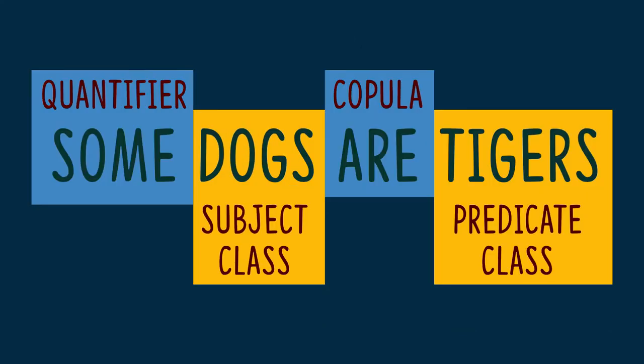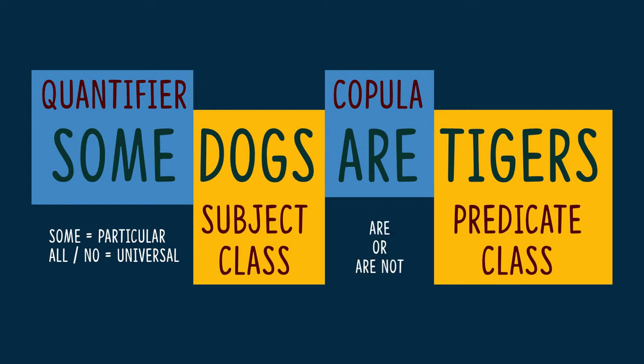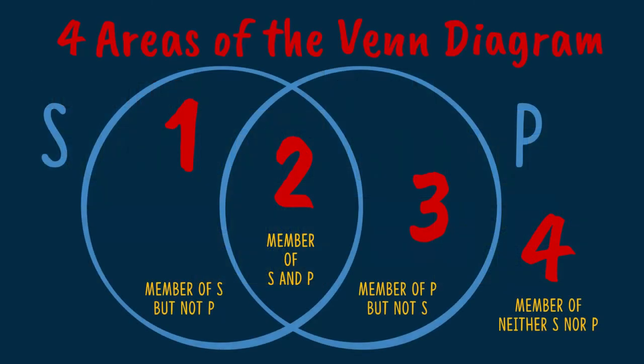As we've said earlier, every categorical statement has four parts: a quantifier, which will either be universal or particular in scope — all, no, some — then we have the subject class, the copula, which is R or R-naught, and then we have the predicate class. We can represent these categorical statements visually with Venn diagrams. Here is a blank Venn diagram with four regions for reference.